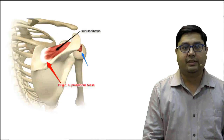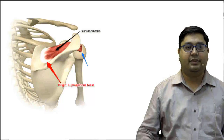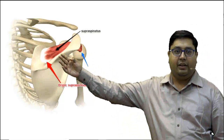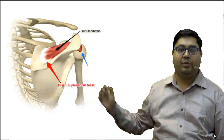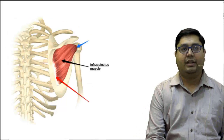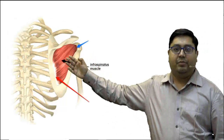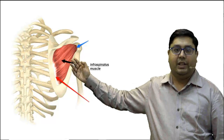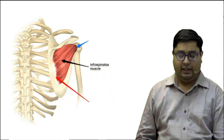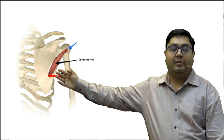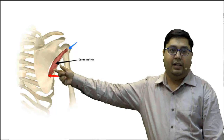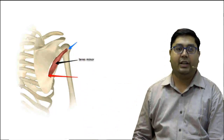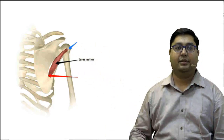Let us see the components of the rotator cuff muscles. We have the supraspinatus, which takes origin from the supraspinous fossa and attaches on the upper facet of the greater tubercle of the humerus. The infraspinatus takes origin from the infraspinous fossa and inserts on the middle facet of the greater tubercle. The teres minor takes origin from the dorsal aspect of the lateral border of the scapula and inserts on the lower facet of the greater tubercle.